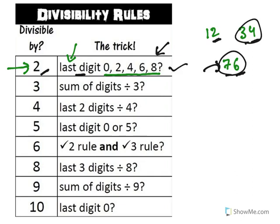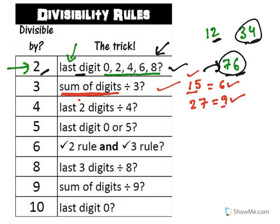For divisibility by 3, the sum of digits should be divisible by 3. Take the 3 times table: 3×5 is 15, and 1+5=6, which is divisible by 3, so 15 is divisible by 3. Another example: 3×9 is 27, and 2+7=9, which is divisible by 3. So you need to sum all the digits — if whatever you get is divisible by 3, then the number is divisible by 3.